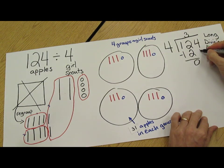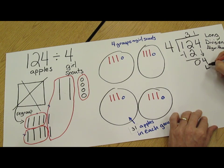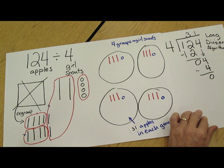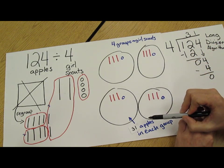Next, we would move to the ones, and 4 ones can be split equally into 4 groups with 1 in each group, which would give us no ones left over and a total of 31 in each equal group.